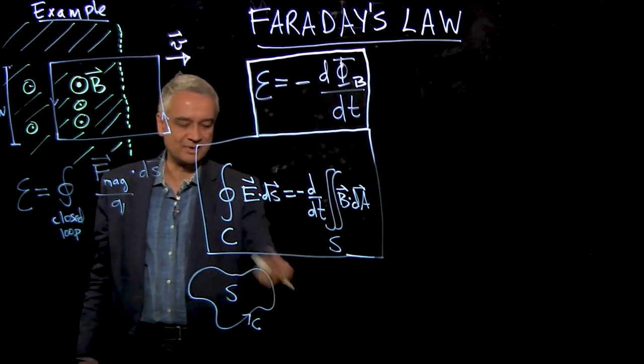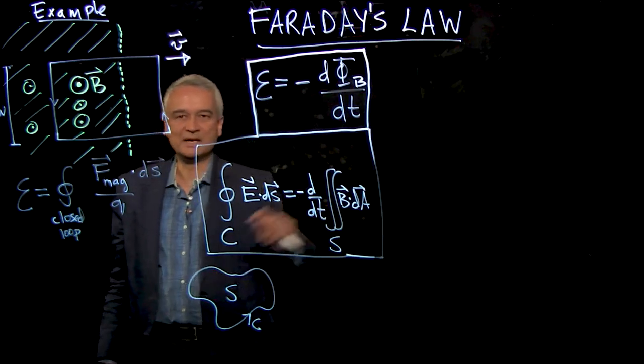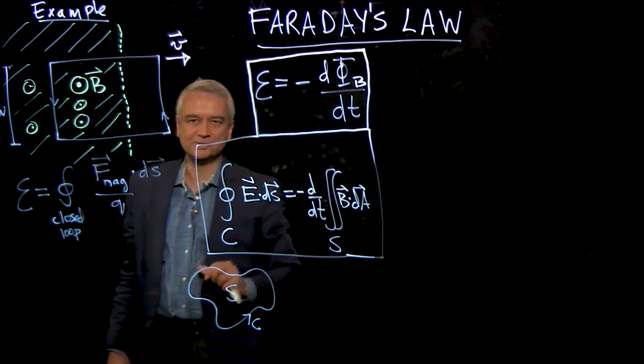For any contour in the universe, the integral of E dot dS around that contour is given by the change of the magnetic flux through that contour. That's Faraday's law.